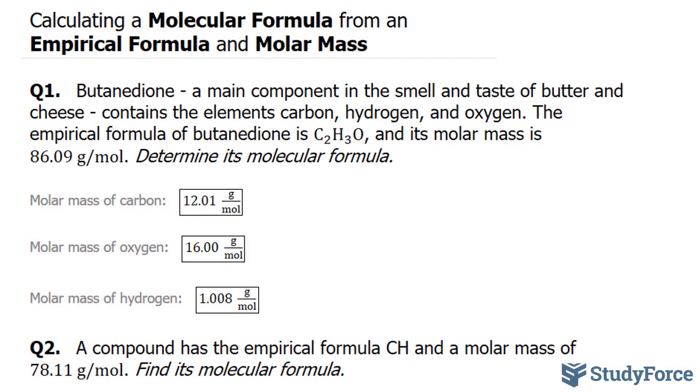So we've been given the empirical formula C2H3O. Let's write that down. We have carbon, which has a molar mass of 12.01, we'll multiply that by 2. We'll multiply the molar mass of hydrogen, which consists of 3 in this empirical formula, 1.008 times 3. And finally, oxygen, which has the molar mass of 16.00, will be multiplied by 1.